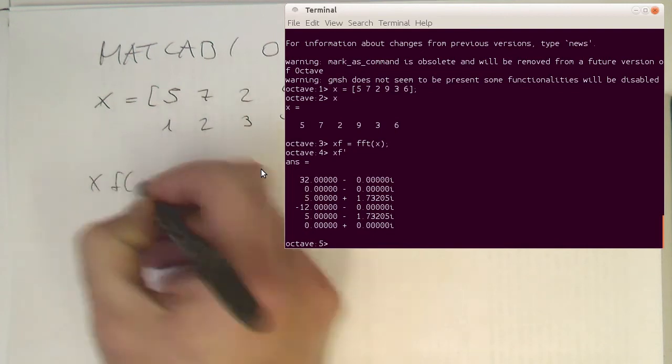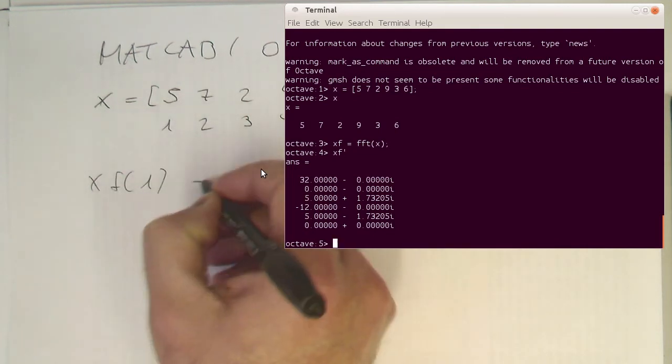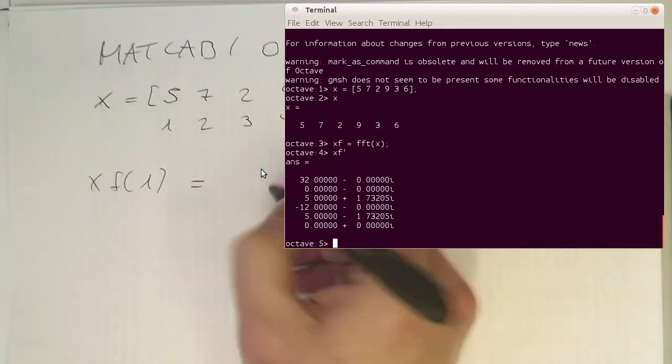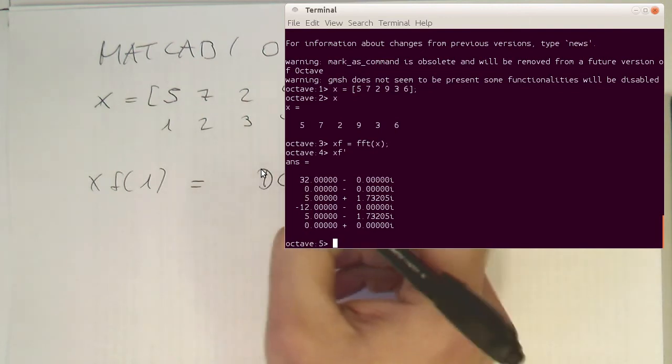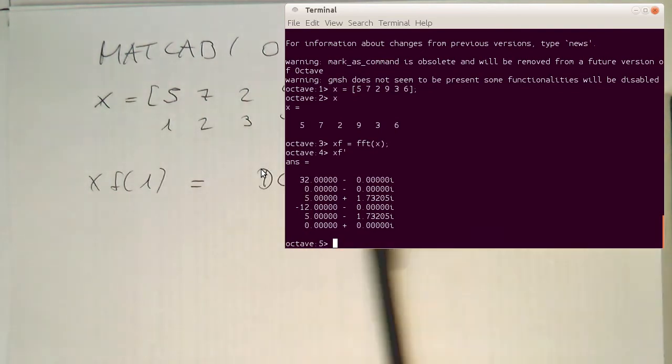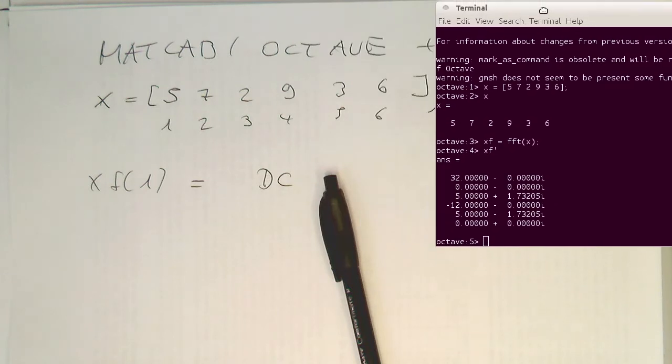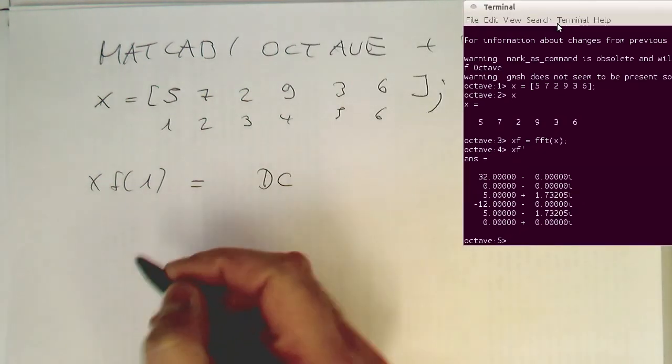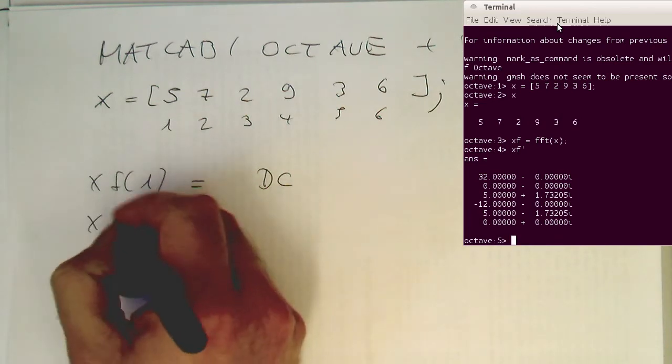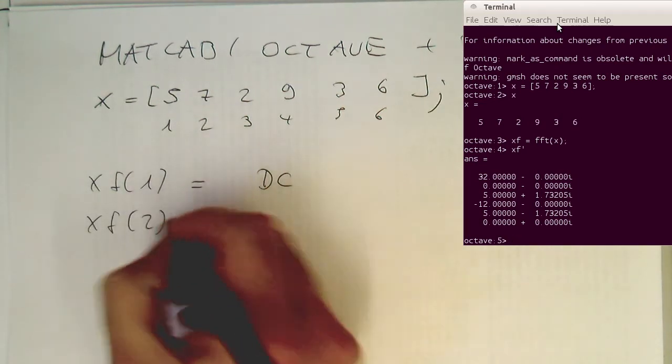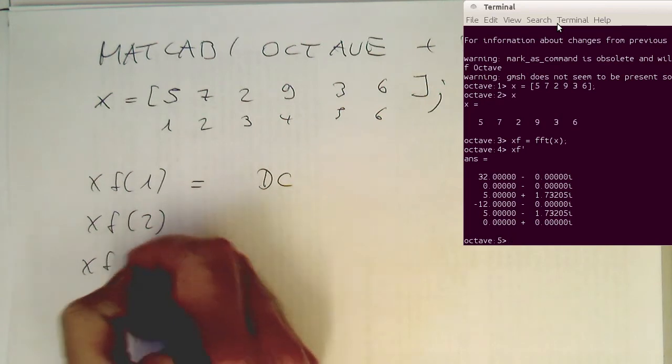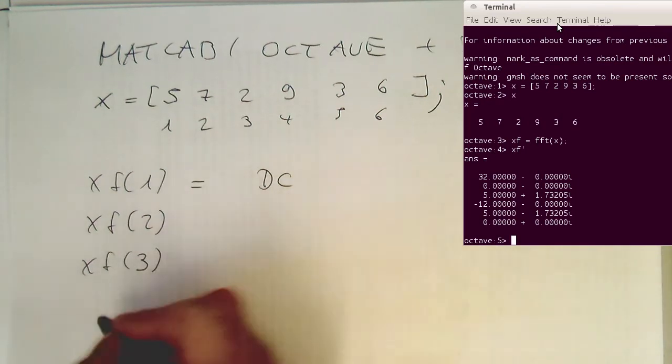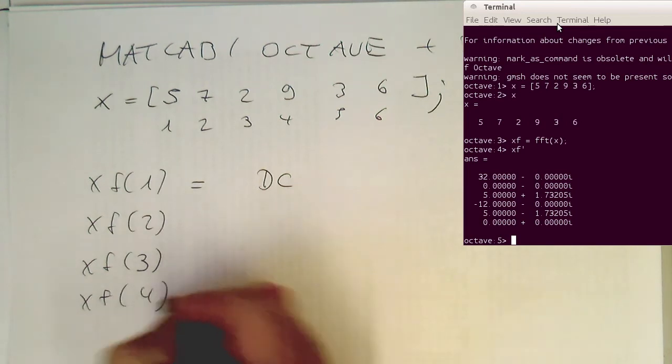And so the XF of 1. So this is hopefully our DC. Let's move this here a bit further out that we see that, like this. And then we've got our XF of 2 here and then our XF of 3 and our XF of 4 here.